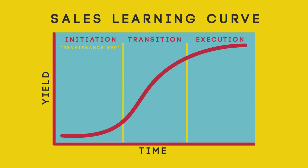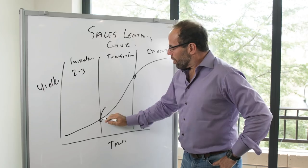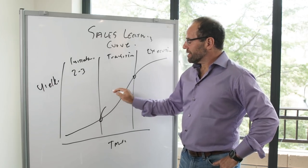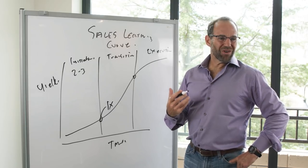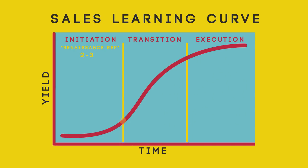You're not going to find the renaissance rep coming out of a large organization. How do I know when I'm not in the initiation phase anymore and I'm in the transition phase? Let's say you have two to three salespeople who are renaissance people. You move from initiation to transition when those two to three salespeople on average generate one times their fully loaded cost — when a salesperson can generate the same amount of money that they are costing.